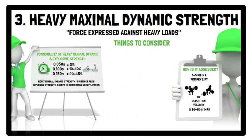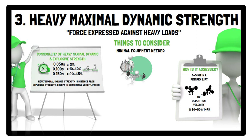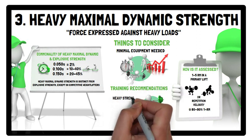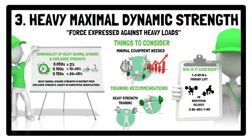Although minimal equipment is needed for a repetition maximum test, the time taken to perform these tests and the requirement to achieve failure can limit their feasibility. However, if using sub-maximal loads to represent heavy maximal dynamic strength, because the proximity to failure is relatively low, they can be performed more frequently and easily integrated into training. Heavy strength training is recommended as the primary training method, while weightlifting derivatives can also be used as a secondary method.